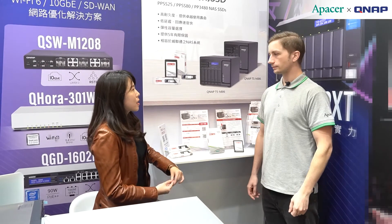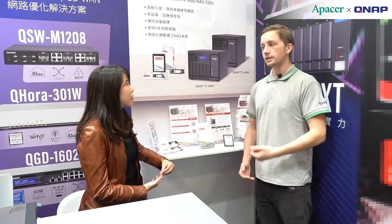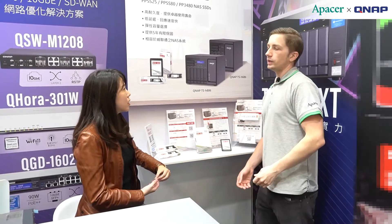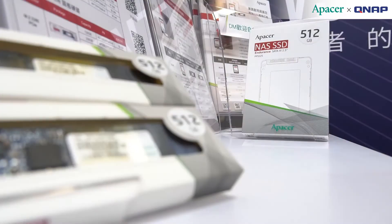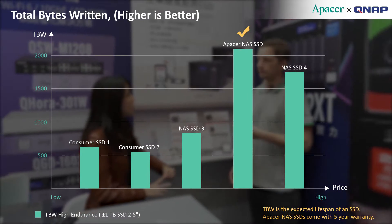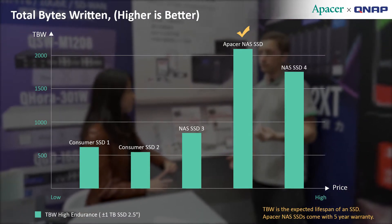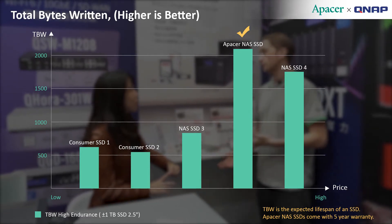What makes a NAS SSD different from the ordinary consumer-grade SSD? Put very simply, lifespan. Ordinary consumer-grade SSDs are not built to write entire terabytes every day for over a year. In the case of the PPSS25, for example, with a 1TB capacity, it can write up to 2,065TB before it's expected to fail. So if a user writes 500GB per day, then they can use this SSD for about 4,000 days, or in other words, up to 11 years.